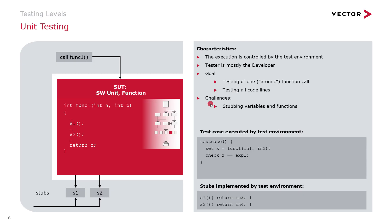Let's dive into unit testing. What is a unit? A unit is the smallest element of our application — a function. In a unit test, we want to test only one function, so only one atomic function call. On the left side of this slide we have our system under test, which is a function, and around that we have our test environment. The test environment calls our function, so the execution is controlled by the test environment. This kind of test is done mostly by the developer. We also want to test all code lines of our function — for example, if we have an if-else statement, we want to test all branches. So we may have to create several unit tests for one function.